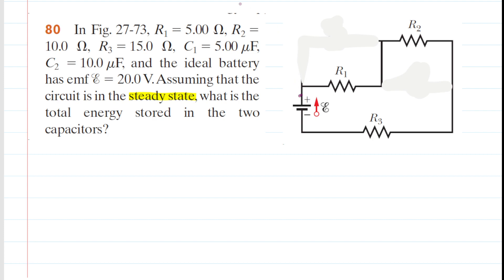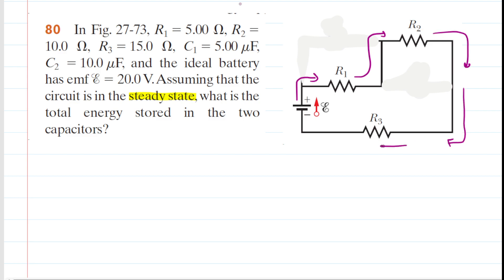Once we do that, we can understand that the current exiting the battery is simply going to flow through this portion of the circuit only at steady state. And this is a nice, simple series circuit consisting of the three resistors. What we can do next is apply Kirchhoff's rule to keep track of the voltage changes as we go around this loop of our circuit.